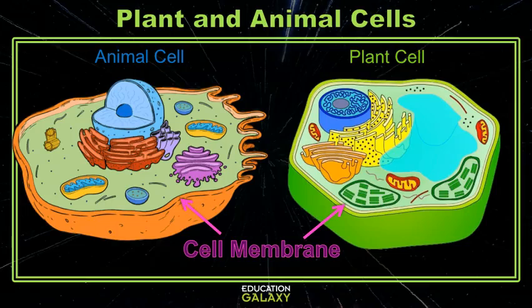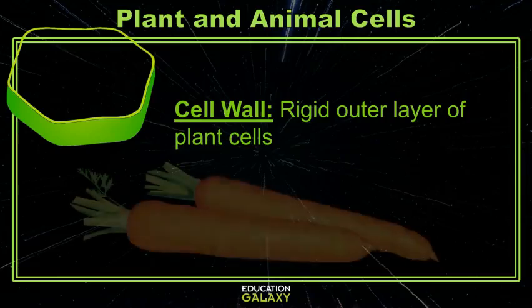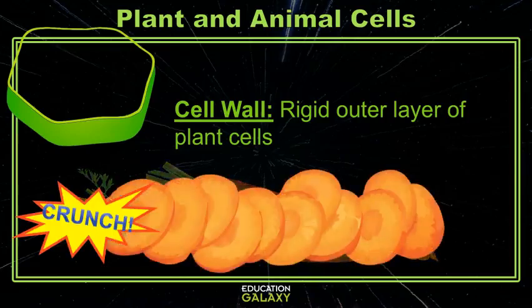If you look at the plant cell, you'll notice that it has another layer outside of the cell membrane. Plant cells have a cell wall — a rigid layer on the very outside of a plant cell, made out of a really strong sugar called cellulose. The cell wall gives plant cells their shape. In fact, that rigid wall is why plants snap when you break their stems, or why vegetables crunch when you bite into them.